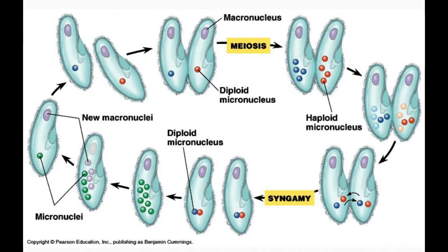Reproduction in most ciliates is via binary fission. However, there is an interesting type of genetic recombination that occurs in paramecium called conjugation. It's not quite sex, and it's not quite horizontal gene transfer — it's a kind of strange intermediate. Two paramecium of compatible mating types come together; there's no differentiation of gametes — in fact, they're not even really gametes — but they form a bridged shared cytoplasm.